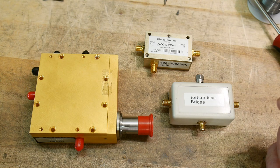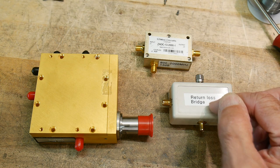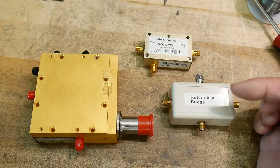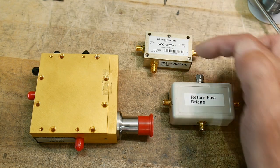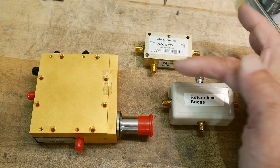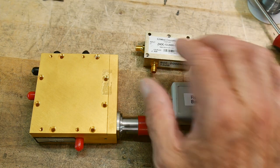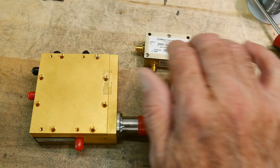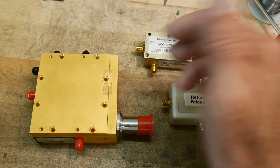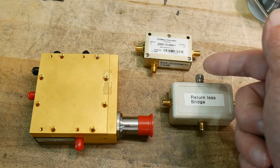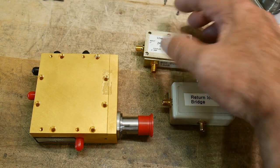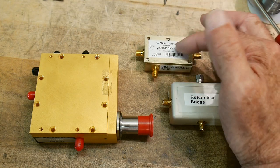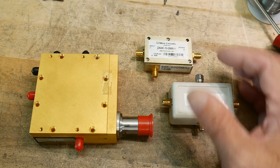There are return loss bridges and then there are couplers. You can measure return loss with a coupler or you can measure return loss with a bridge. I talked about couplers once before, about microstrip design couplers where there's a parallel conductor next to the transmission line that couples some of the energy and brings it out onto the third port. This one acts the same way but is designed a little bit differently.